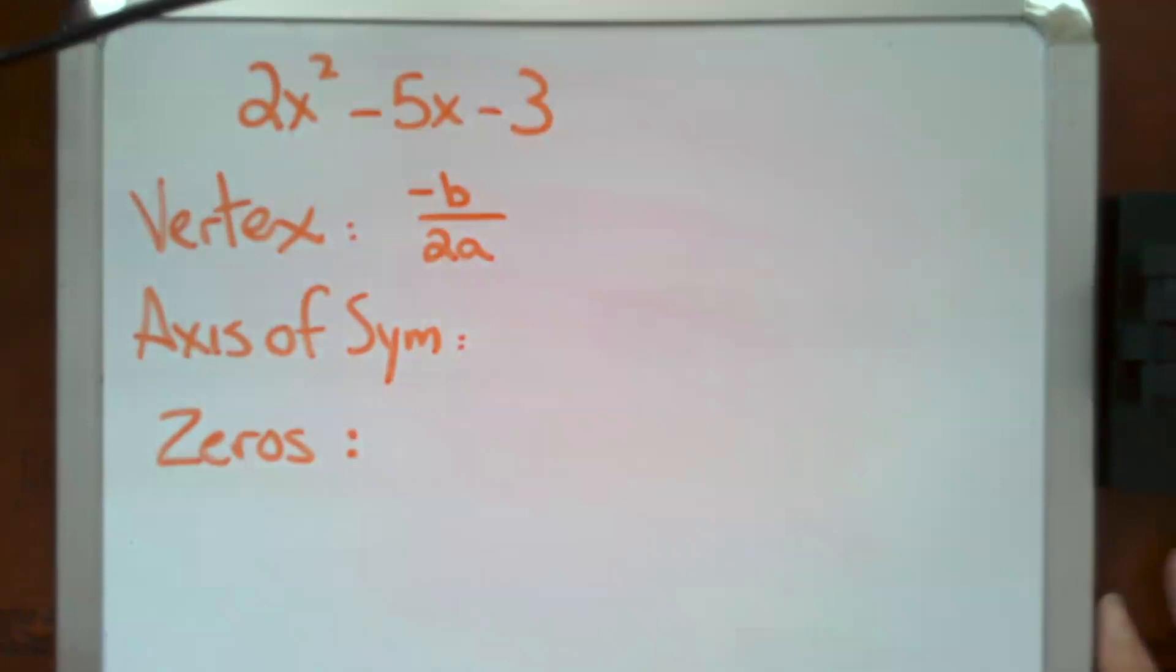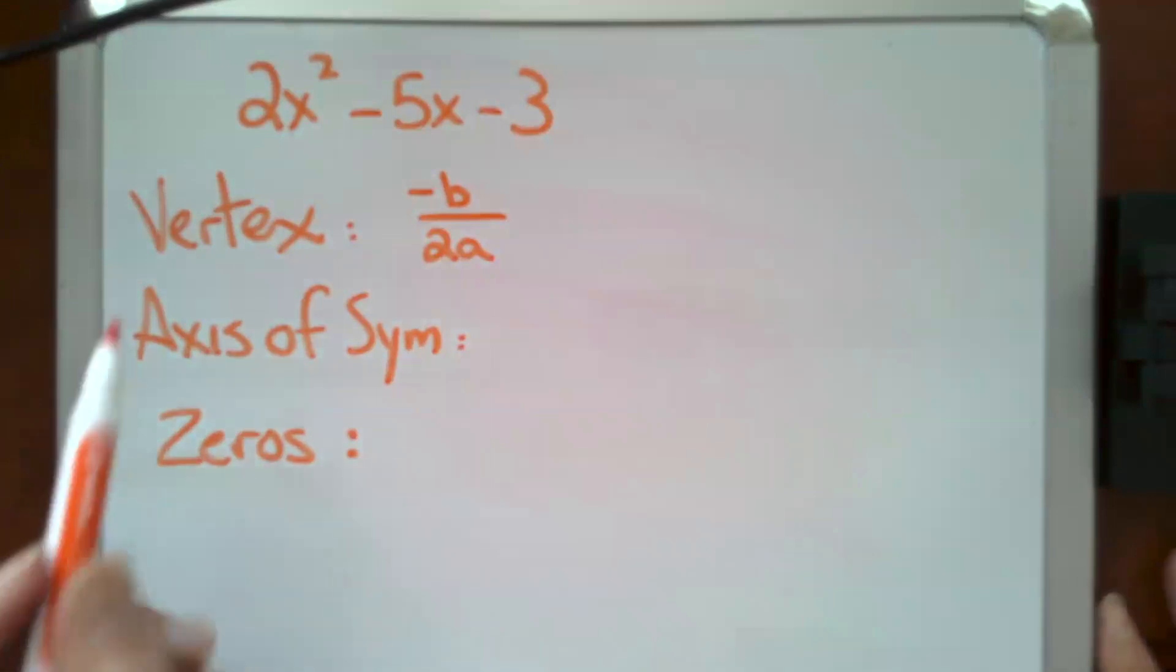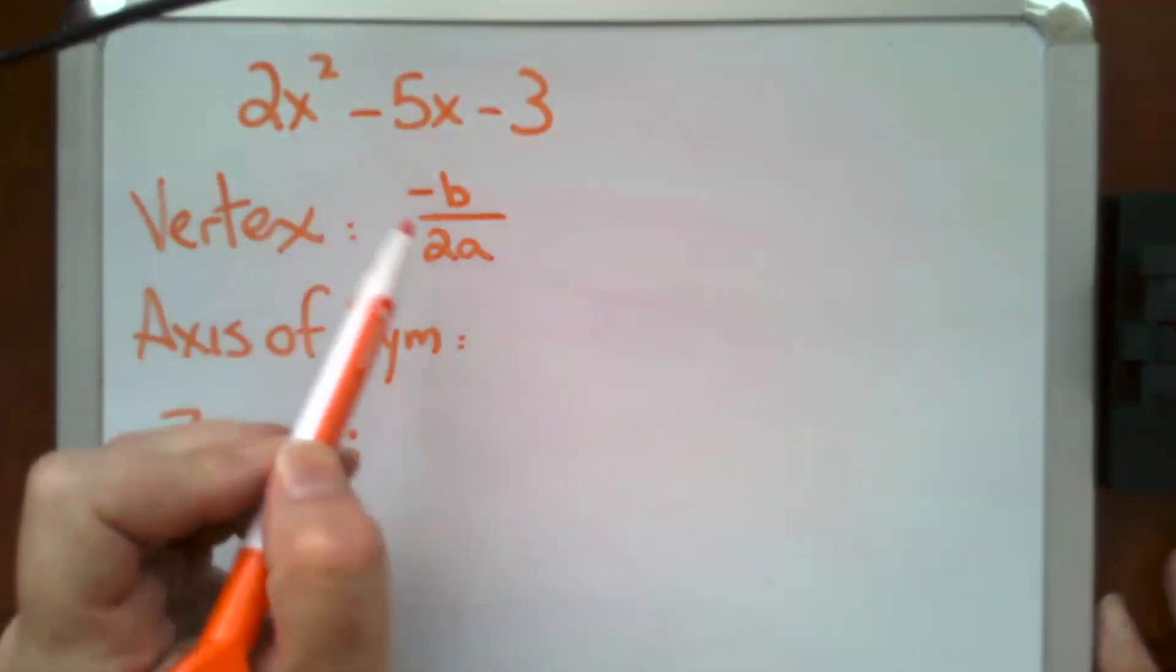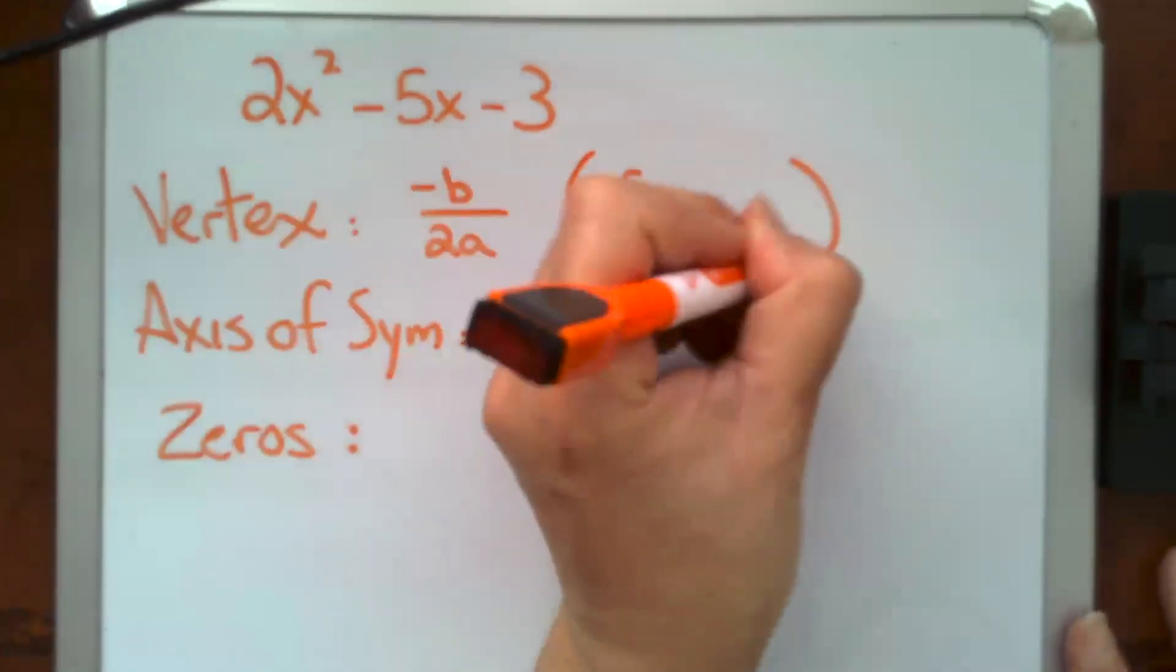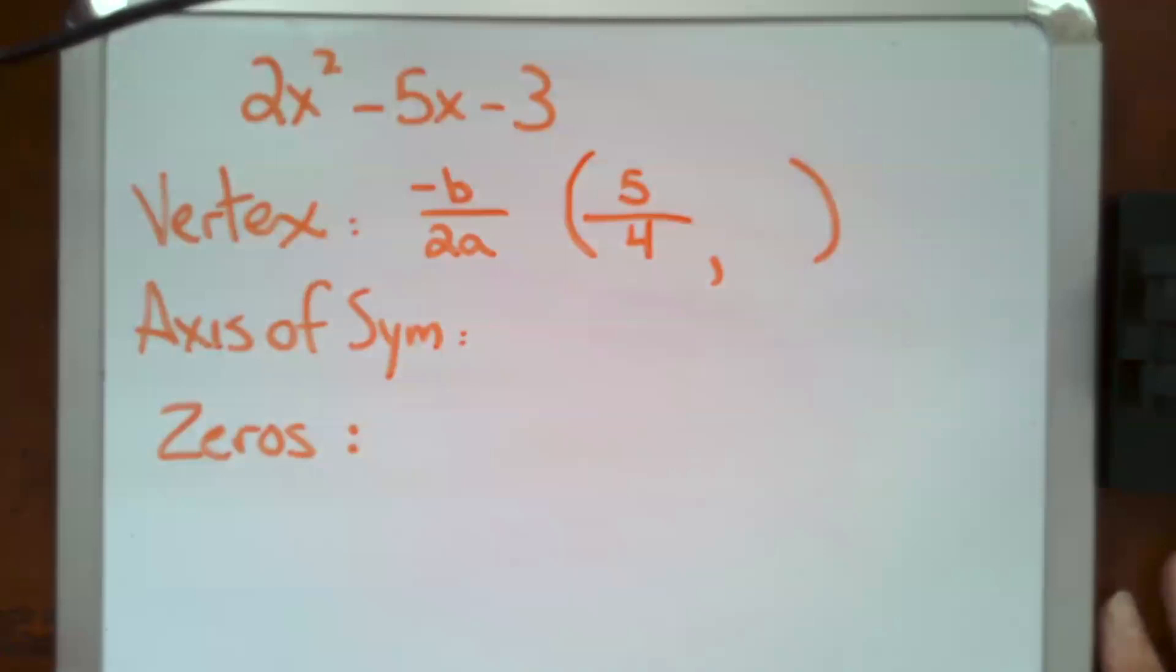So if we go ahead and look at our equation and plug in numbers, well our b is negative 5, so negative b is 5, and our a is 2. So 2a is 4, and so the x-coordinate of our vertex is 5 over 4.